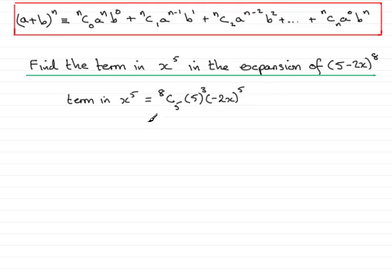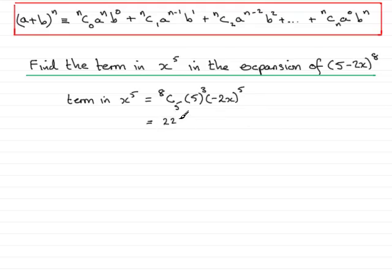All that I need to do now is just simply work it out, and you can do this on any calculator. 8C5 is 56, and 5 cubed is 125, and minus 2x to the power 5 is minus 32x to the power 5. Putting that all together, you should find you get 224,000x to the power 5. So that's your term in x to the power 5 without having to resort to the full expansion.